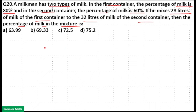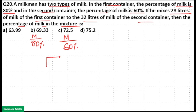In the first container, the percentage of milk is 80%, and in the second container it is 60%. When you mix both containers, the percentage of milk in the mixture is unknown — we have to find it. Taking it as x, we get 80 minus x on one side and 60 minus x on the other side.